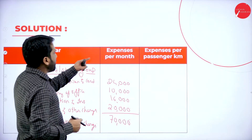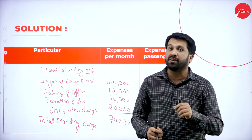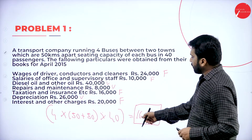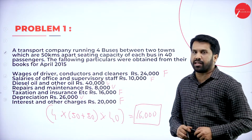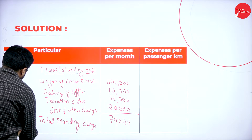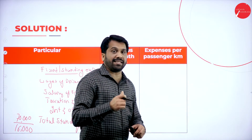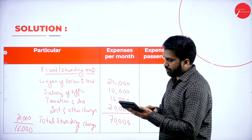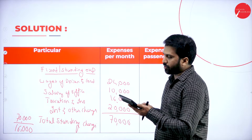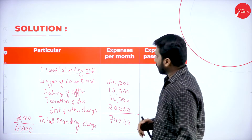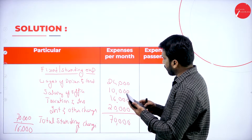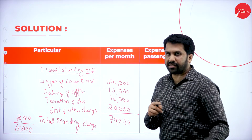Expenses per month we got, but expenses per kilometer you did not get. We have 70,000 and 16,000 total passenger-kilometers. It will be 70,000 divided by 16,000. I got 4.375.